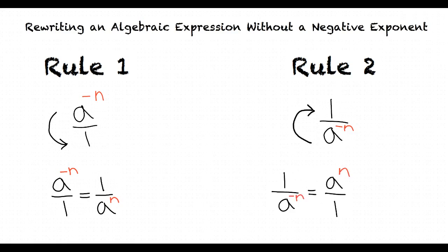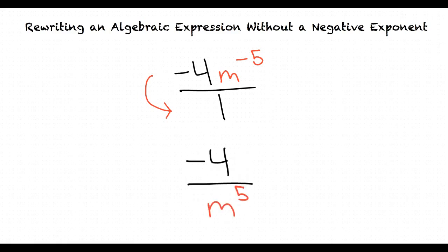I'm starting to get the concept, but could we go over some example problems? Of course! Let's start with the example problem negative 4 times m to the power negative 5. Since the negative exponent is in the numerator, we're going to follow rule 1 and move the base and exponent to the denominator to make it positive. This results in our final answer of negative 4 over m to the power 5.